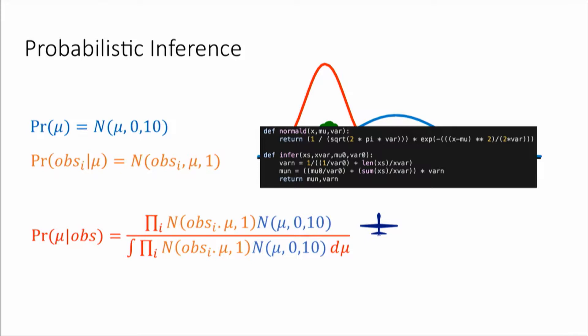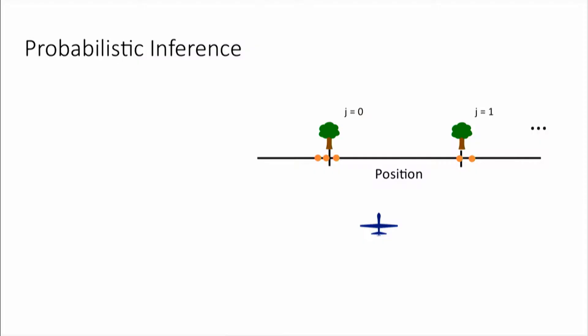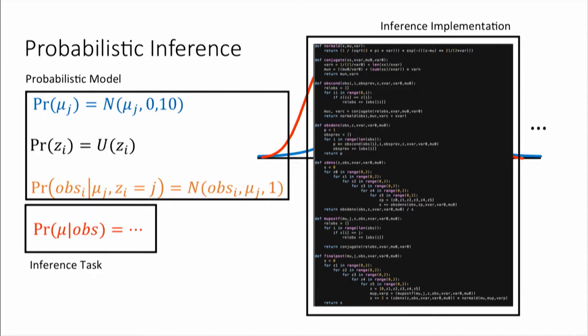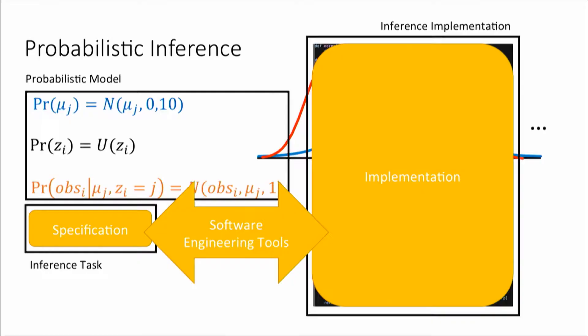This is what I mean when I say probabilistic inference is a programming methodology: write down the probabilistic model, write down a specification of the inference task, and then implement it. I really like this because it's very general — if there's more than one tree, I can write a more complicated model and the methodology still holds. As a programming languages researcher, the interesting question is what software engineering tools we'll build to relate this rigorous specification to its implementation. Spoiler: in this talk we'll discuss a verification system that verifies the implementation against the specification.